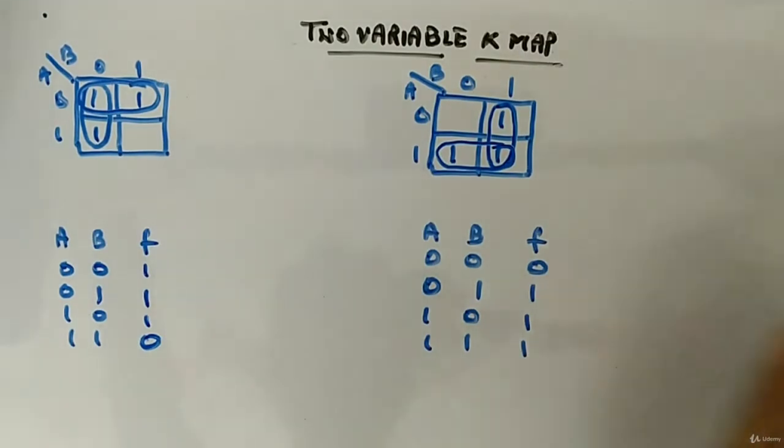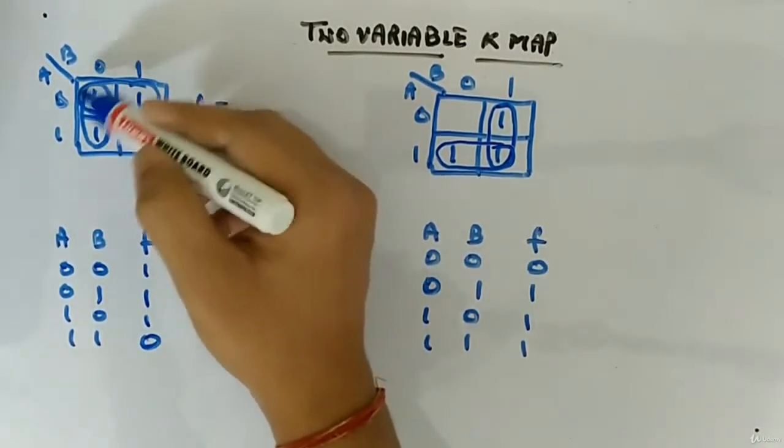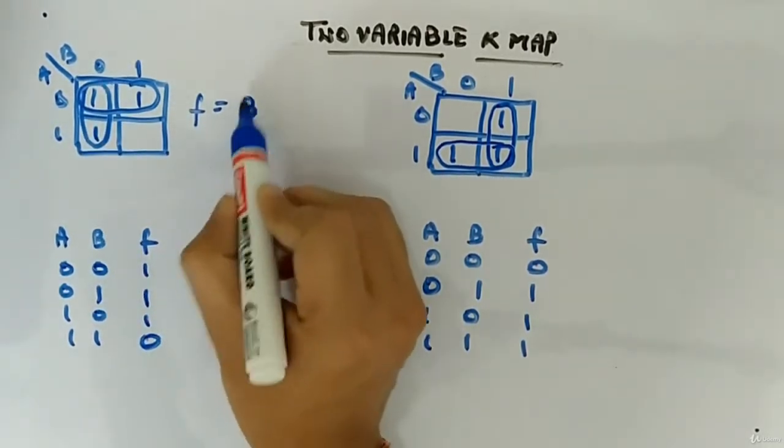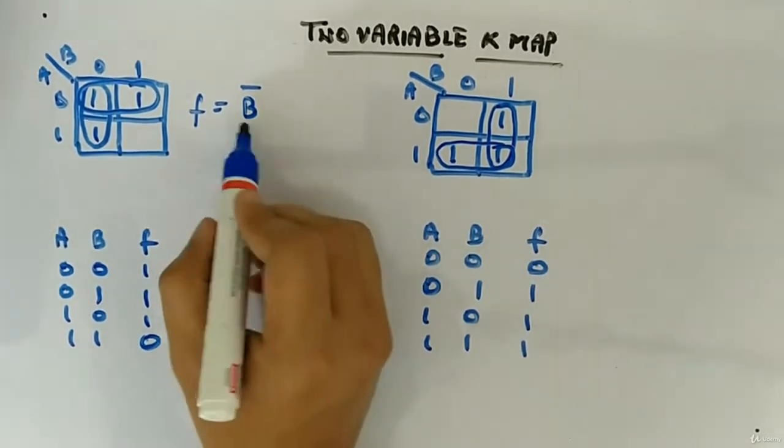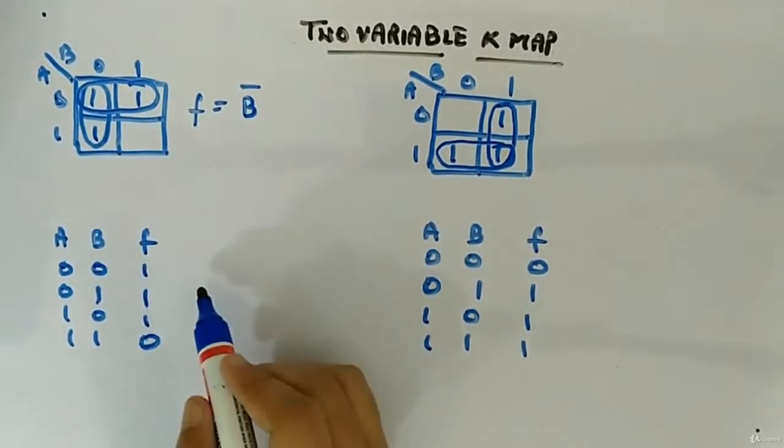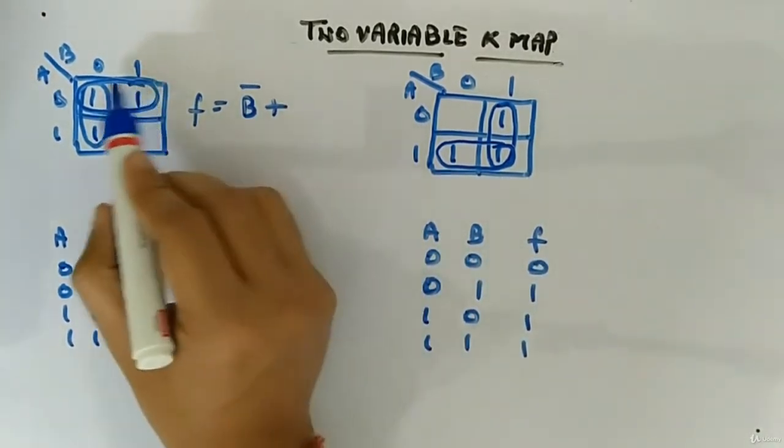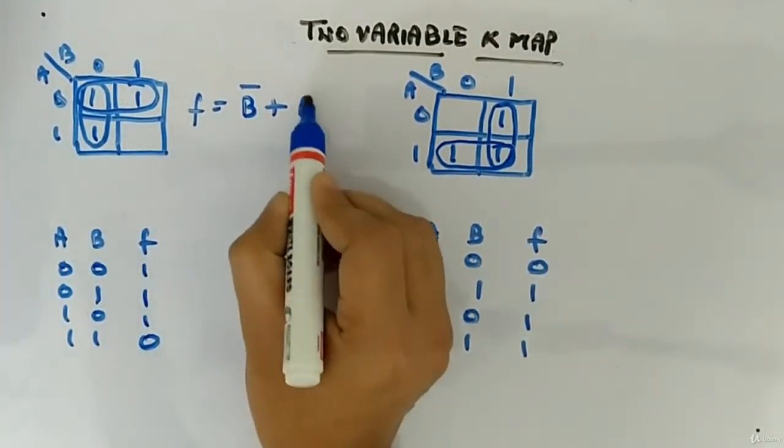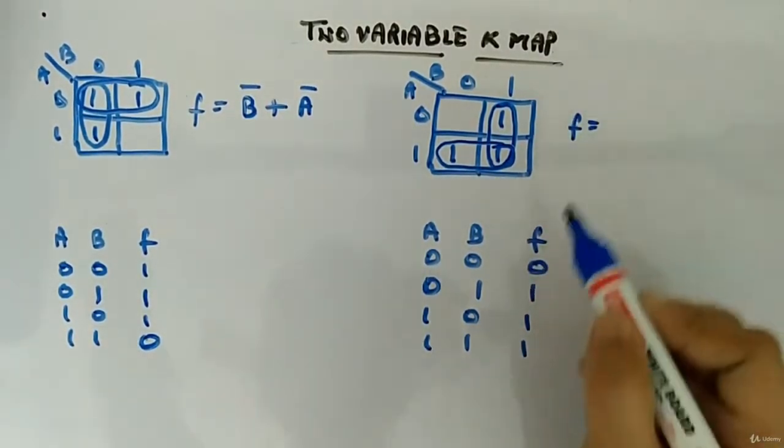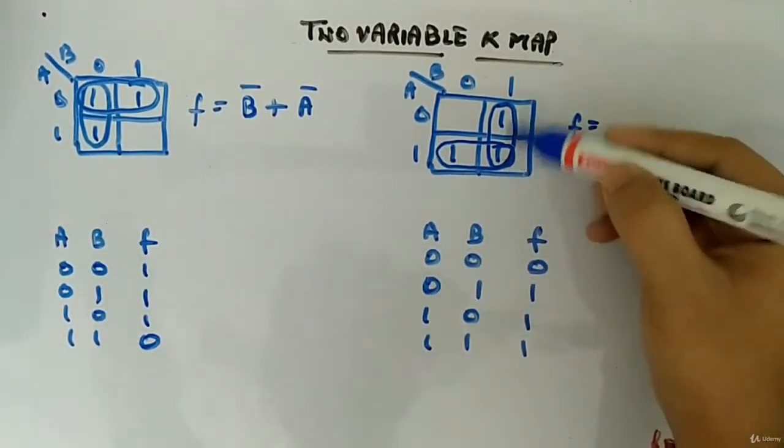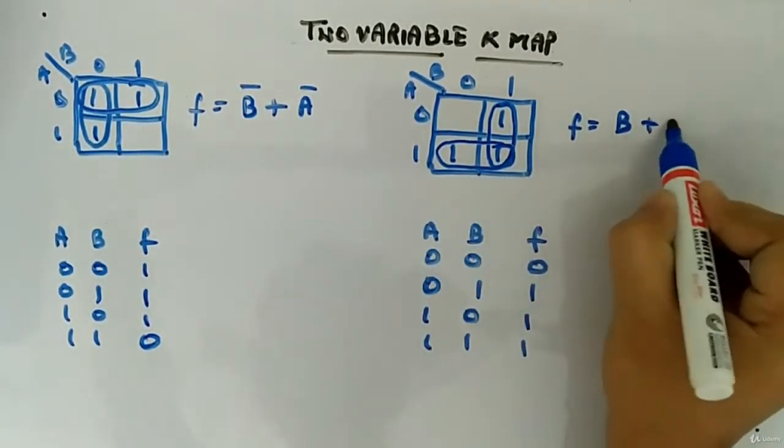So function value will be, because of one pair, this pair one where B bar. Remember we are looking for min terms, not max term. So this is B bar, and plus because of this pair it is A bar. Similarly here, if you will see, the function value will be because of this guy it is B, because of this guy the common is A.